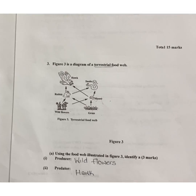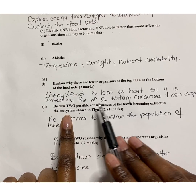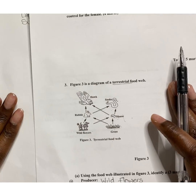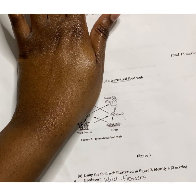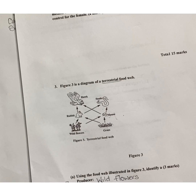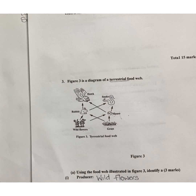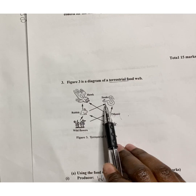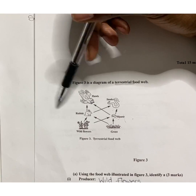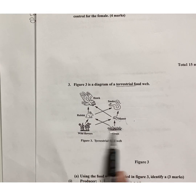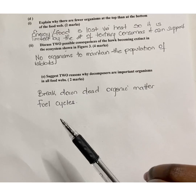Part e: Discuss two possible consequences of the hawk becoming extinct in the ecosystem shown in figure three. If the hawk is no longer available — it is a predator — its prey will no longer be eaten by it, so the population of the prey will increase. Also, biological relationships like competition between the snake and the hawk would change. With more primary consumers in the second trophic level, there would be greater strain on the first trophic level, with producers being consumed more heavily.